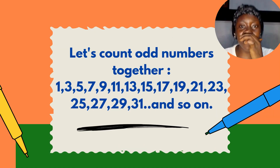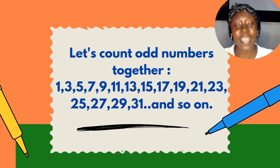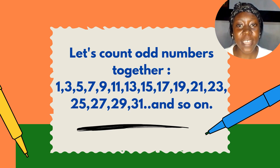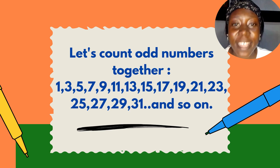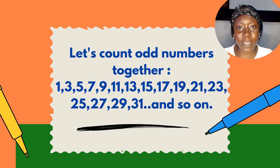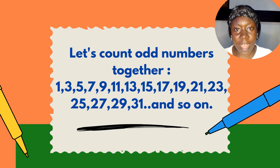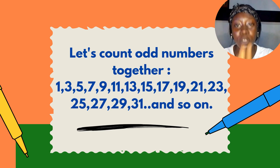Let's count odd numbers together. We have one, three, five, seven, nine, eleven, thirteen, fifteen, seventeen, nineteen, twenty-one, twenty-three, twenty-five, twenty-seven, twenty-nine, thirty-one and so on. So these are odd numbers.